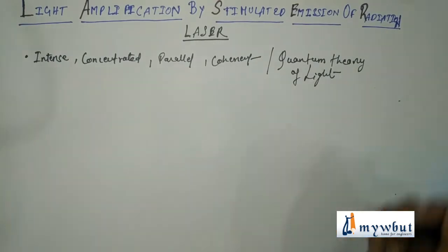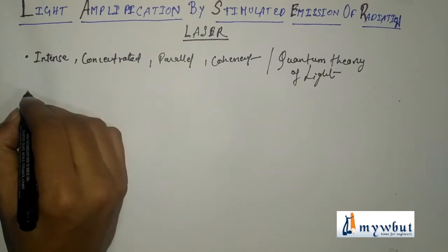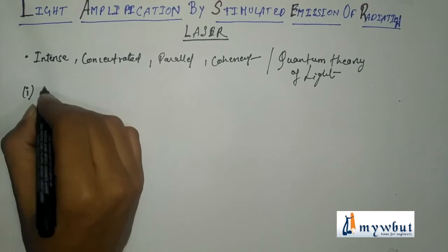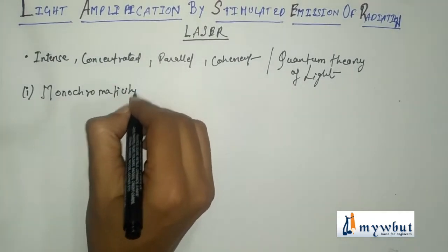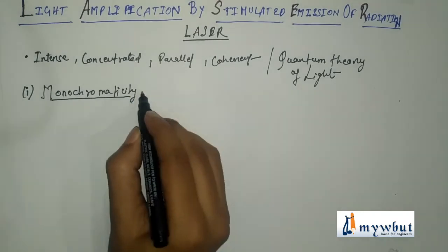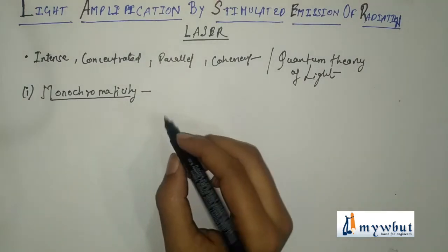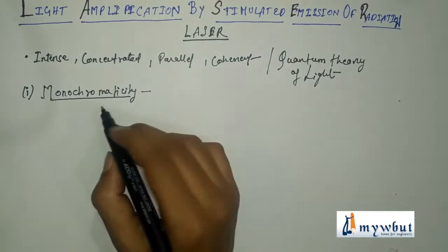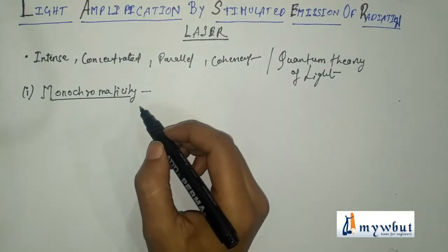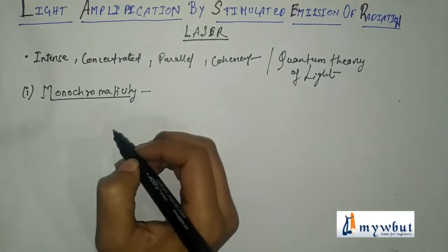Let us now write down the properties of laser and compare with ordinary light. Number one is monochromaticity. Laser is highly monochromatic radiation. The normal or conventional monochromatic source of light has a wider range of wavelengths, whereas laser can be produced only from lamps that are monochromatic in nature, for example sodium vapor lamps.